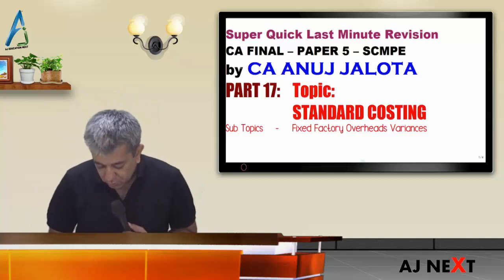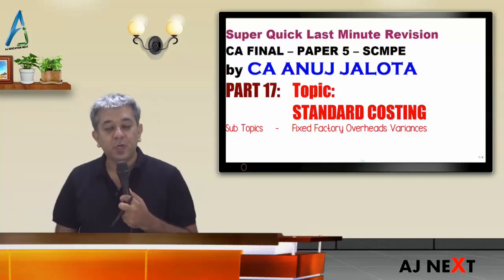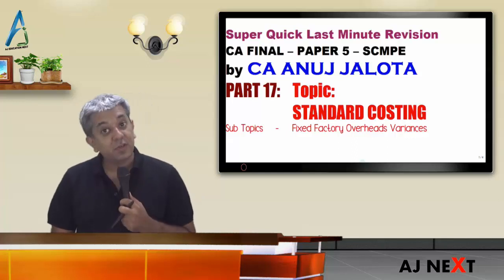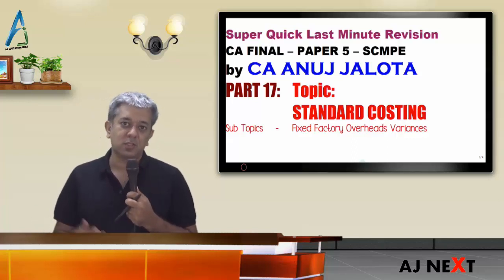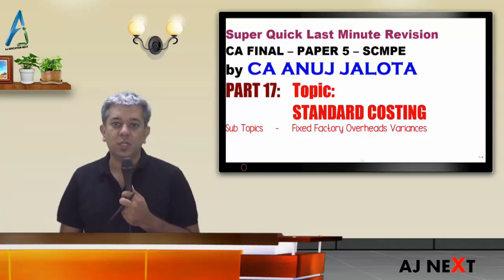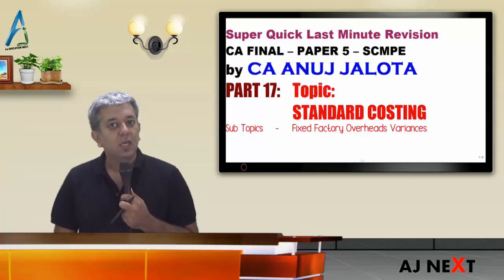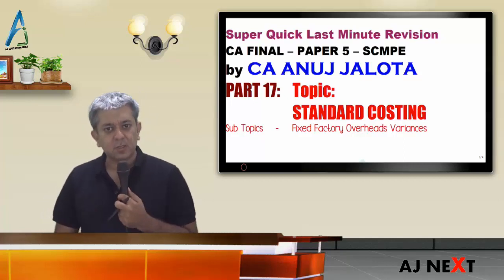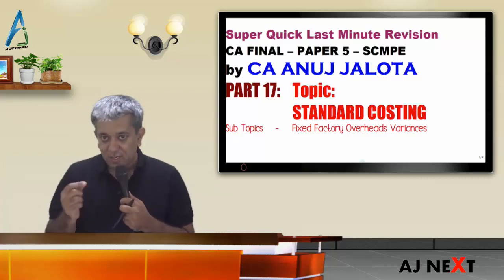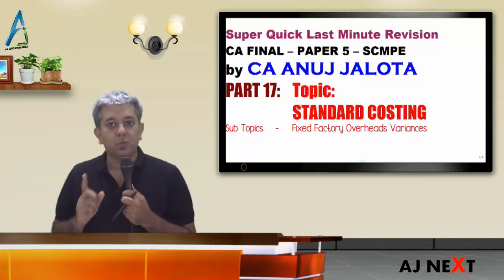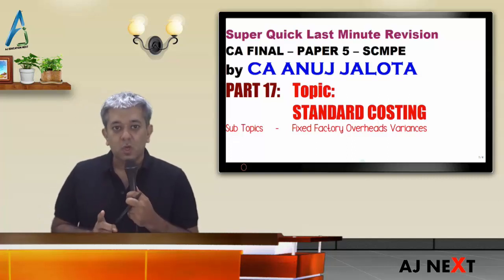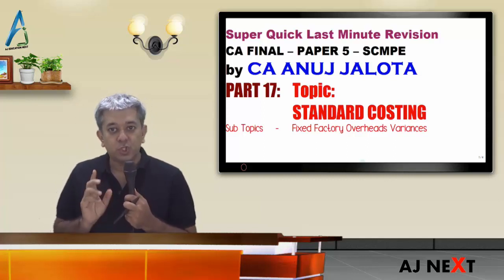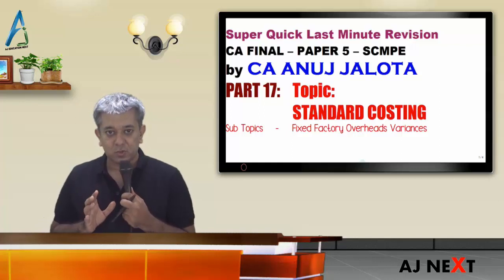Hi guys, welcome to super quick revision. We have finished 16 lectures till now, so let's start lecture 17. This is a continuation of standard costing — fixed factory overheads. In class, we took the maximum time for explaining these variances. In the new course, they will mostly ask strategy-based questions, the way we have done in class.